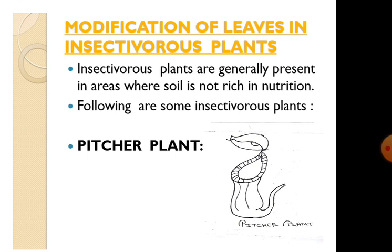Modifications of leaves in insectivorous plants. Plants that eat insects are called insectivorous plants. These plants are generally present in areas where the soil is not rich in nutrition, so they get their food by digesting insects caught in a trap formed by modified leaves. In a pitcher plant, the leaf is modified into a pitcher, and the apex of the leaf forms a lid. The petiole of the leaf coils like a tendril, and as soon as the insect enters the pitcher through the opening, the lid closes. The plant then secretes digestive juice and digests the insect.